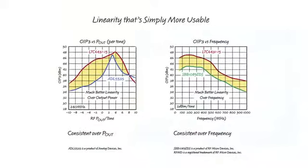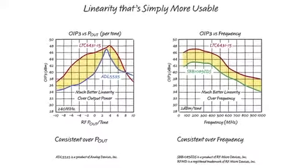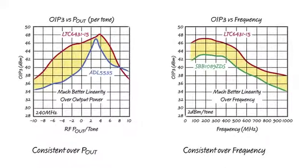Linearity is actually much more than just a single number in a datasheet. It's important that an amplifier maintain its linearity performance over a wide range of operating conditions, particularly RF output power and frequency. In this regard, the LTC6431-15 has some amazing specs. The left graph shows output IP3 performance over RF output power. Compared to competitive products, the LTC6431-15 offers amazing linearity over a far wider range of output power.